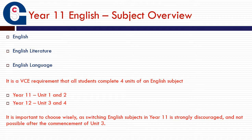It is a VCA requirement that all students complete four units of an English subject — Unit 1 and 2 at Year 11, and Unit 3 and 4 at Year 12. We do want to emphasise that it is important to choose wisely, as switching English subjects in Year 11 is strongly discouraged, whether that be at the end of Unit 1 or Unit 2, and it's not possible after the commencement of Unit 3. We encourage this for the best opportunity to develop the skills appropriate to that form of English to ensure the best possible outcome for the students.